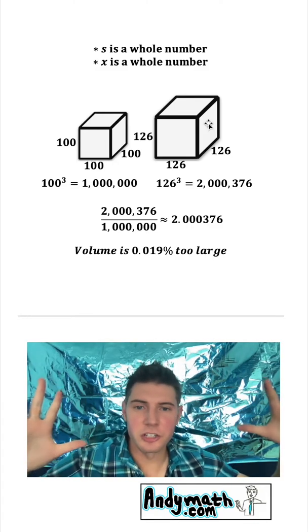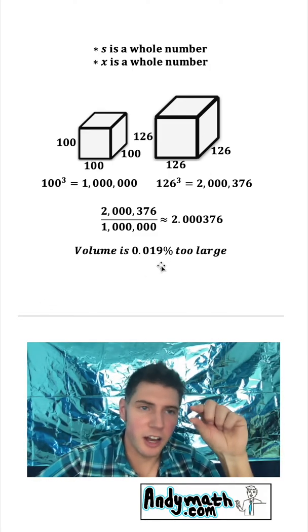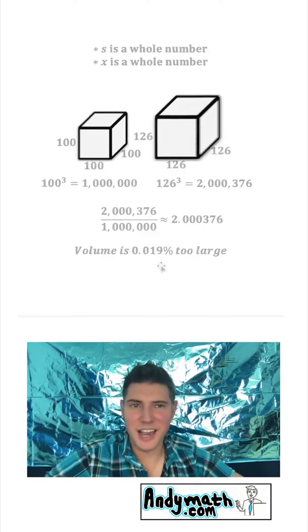And we can keep choosing larger and larger numbers and keep getting it even closer and closer. We can make this percentage that it's off as small as we want, but we can never be exact. And here's why.